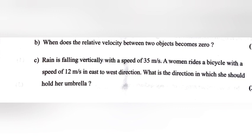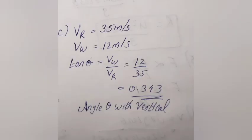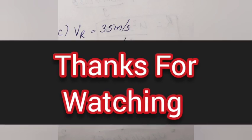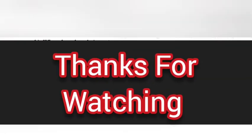Part c: Rain is falling vertically with a speed of 35 m/s. A woman rides a bicycle at 12 m/s in the east-to-west direction. What direction should she hold her umbrella? Answer: Vr = 35 m/s, Vw = 12 m/s. tanθ = Vw / Vr = 12 / 35 = 0.343. The umbrella should be held at angle θ with the vertical.